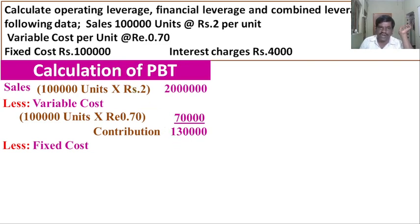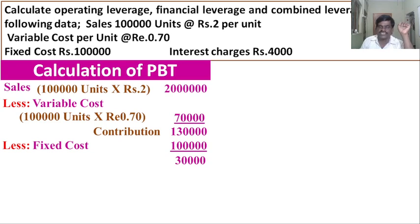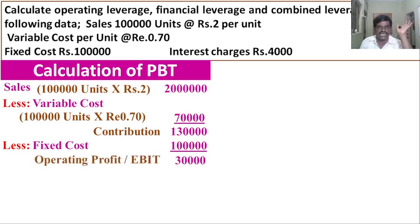Fixed cost is rupees one lakh. So contribution of rupees 1,30,000 minus fixed cost of rupees one lakh gives us rupees 30,000. This rupees 30,000 is called operating profit, or earning before interest and tax — EBIT.